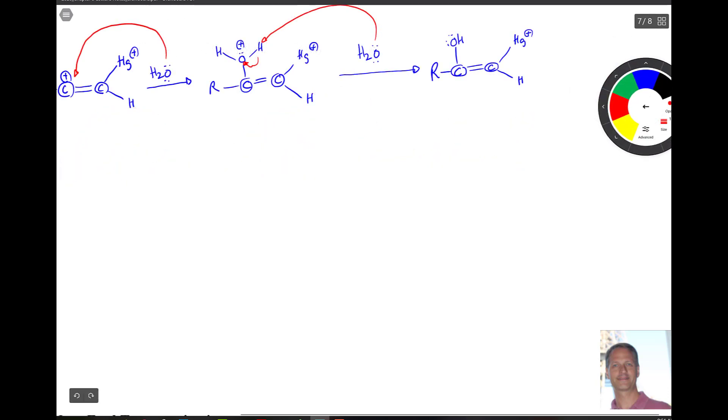Okay, and what we form here is this kind of intermediate. So it looks kind of like an enol because you've got your OH group here. That's your ol and you've got your double bond here. That's your ene. Only problem is we got to get rid of this guy.